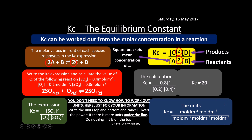You don't need to know how to work out the units for Kc at A-level, but as extra information: since concentration is in mol dm⁻³, you write out the units for each term, cancel top and bottom, and invert the remaining indices. In this case the units come out as mol⁻¹ dm³.